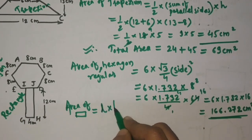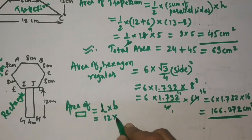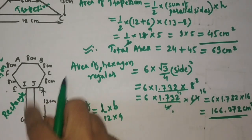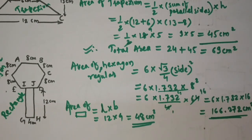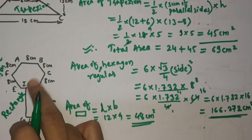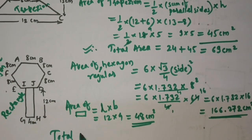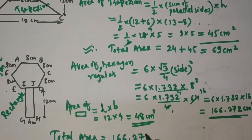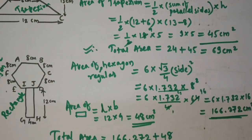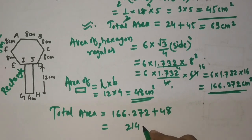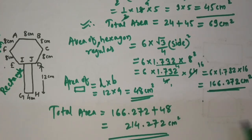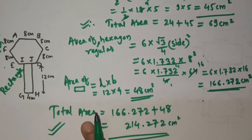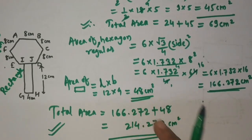The rectangle area is 48 cm². Adding both areas together: total area = 166.272 + 48 = 214.272 cm². This is the final area of the combined shape, which is the sum of the regular hexagon's area and the rectangle's area.